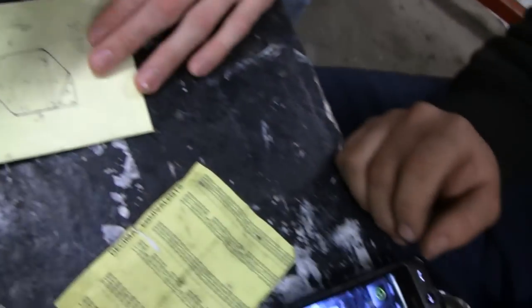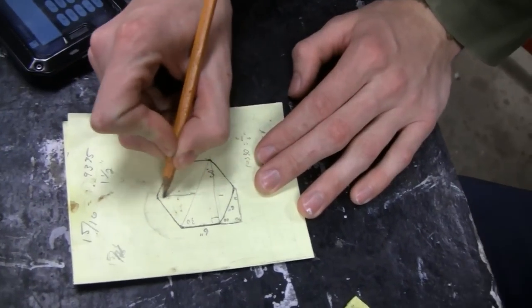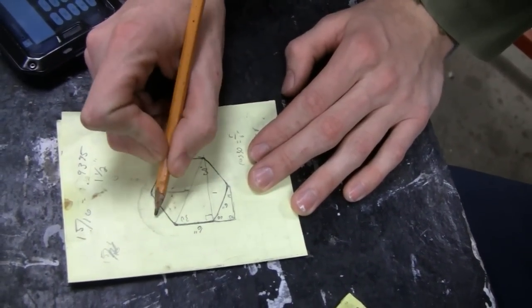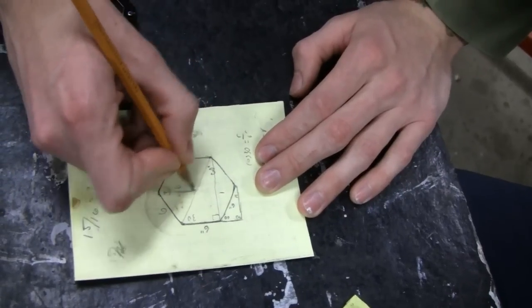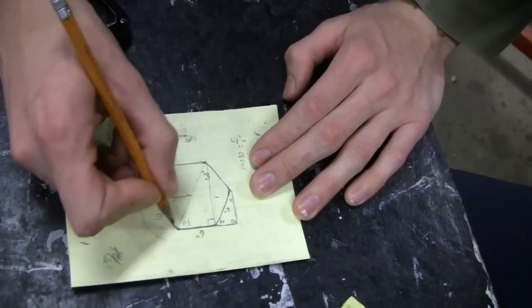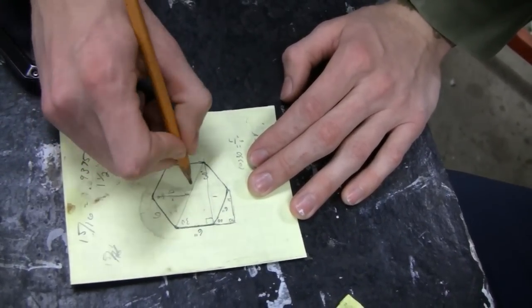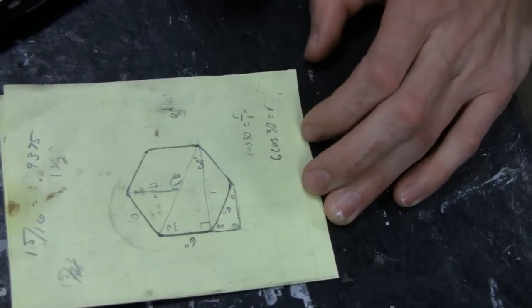So Matt, hand me your pencil. Imagine that this is one of your triangles here. So if you know that this is six, this is six, they're all six, so your diameter is twice one of the sides. So we know that that's twelve. Do you agree with that?